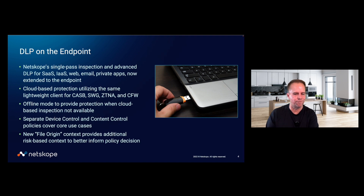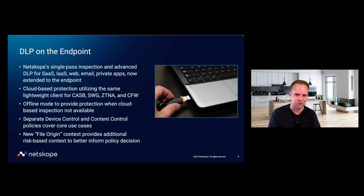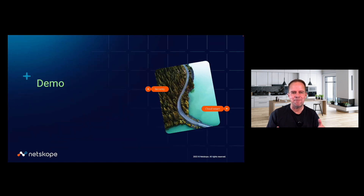Content control will obviously focus on the content. Last but certainly not least, we are introducing a new contextual input called file origin. This is a risk-based input that helps you make more effective decisions on whether you want to allow data to go to the USB storage device. With that, let me give you a demo of what this actually looks like.